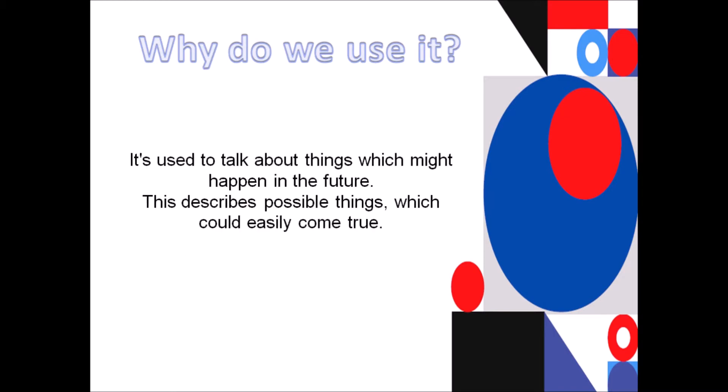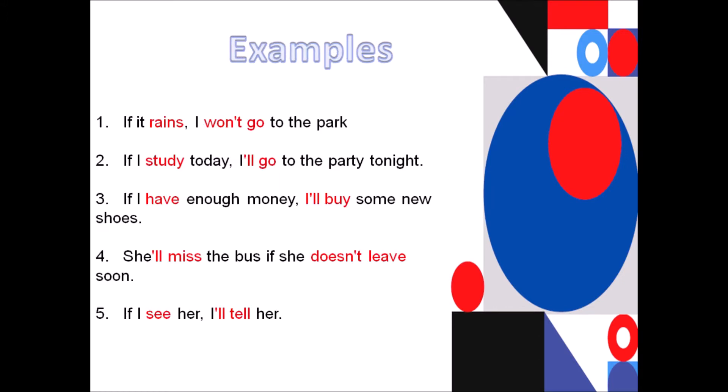Why do we use it? Guys, the first conditional is used to talk about things which might happen in the future. This describes possible things which could easily come true. So look at these examples here. If it rains, I won't go to the park. If I study today, I will go to the party tonight. If I have enough money, I will buy some new shoes. She will miss the bus if she doesn't leave soon. If I see her, I will tell her.